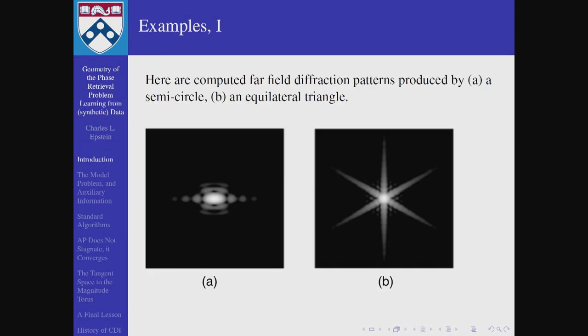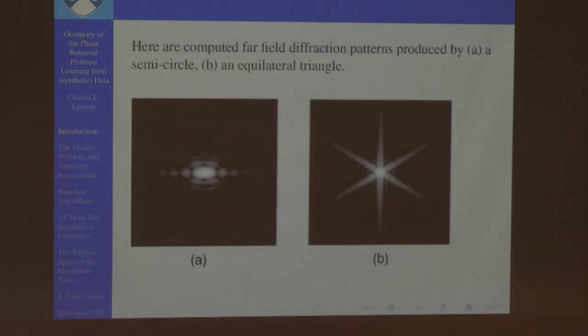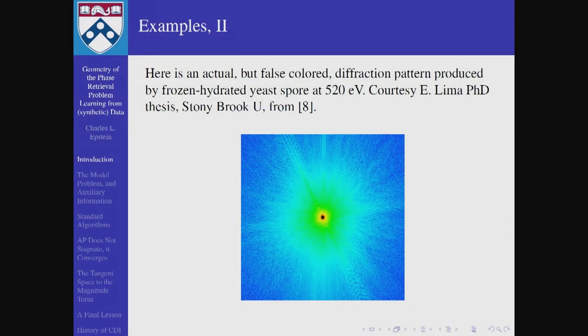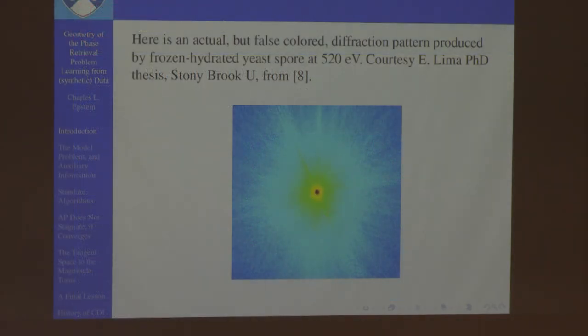Here are some examples. That's the far field pattern produced by scattering off a semicircular hole in a metal plate, and this is the far field pattern produced by an equilateral triangular hole in a plate. That's what an actual genuine diffraction pattern produced by a yeast spore at half a keV looks like. Of course the colors aren't real, but that gives you an idea of the kind of data and intensity that you collect.